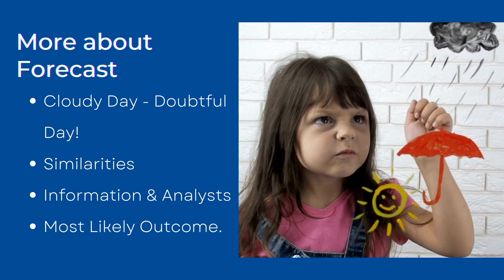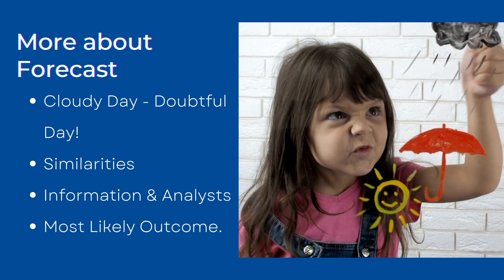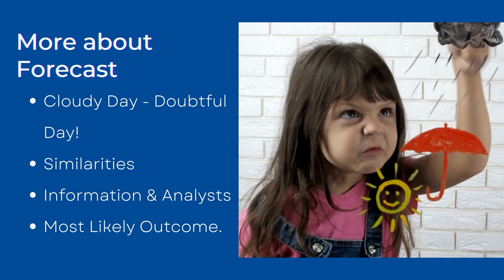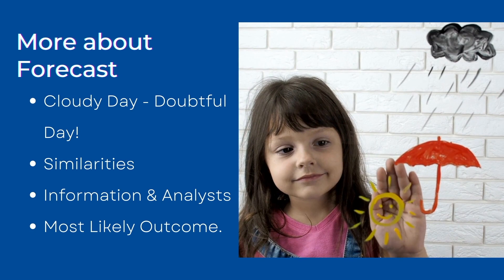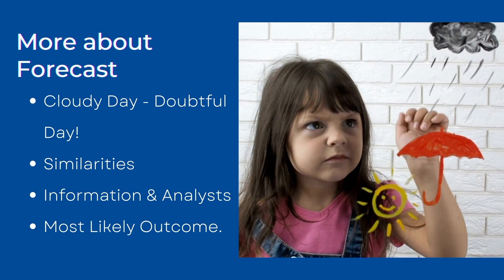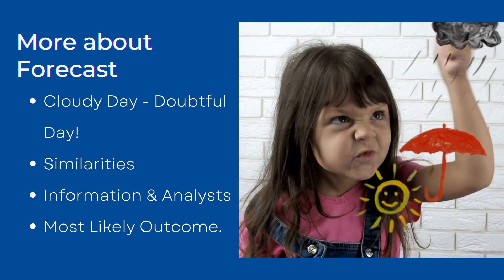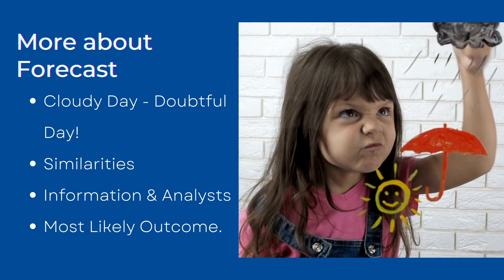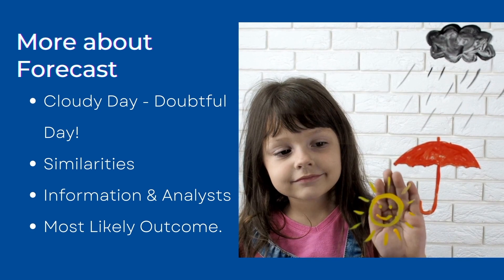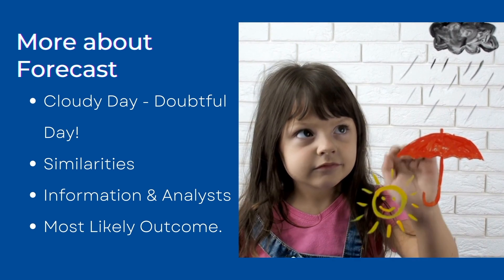We will be doubtful almost all the time, like we are about weather on a cloudy day. That is why we need to observe the information and make calculated decisions. Weather forecasting is similar to technical analysis — it is imperfect and will not give the same result always. In order to do technical analysis we require a large amount of information and analysts with sound knowledge and experience. The result may not be accurate but it will be the most likely outcome.